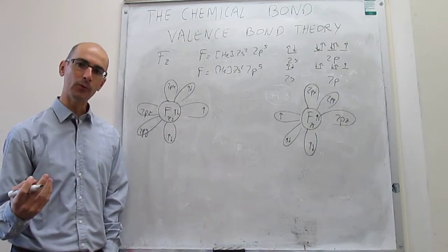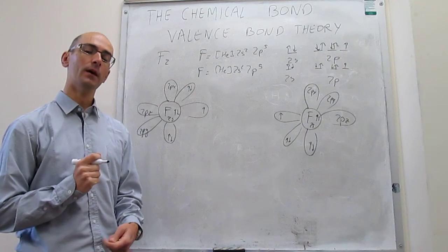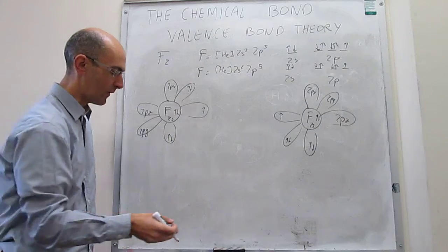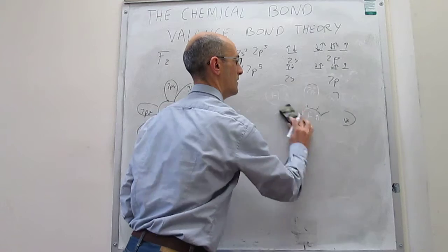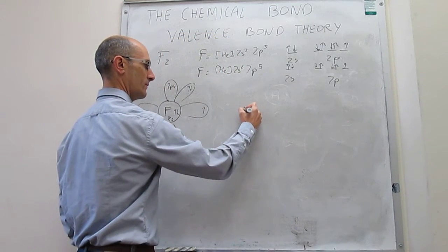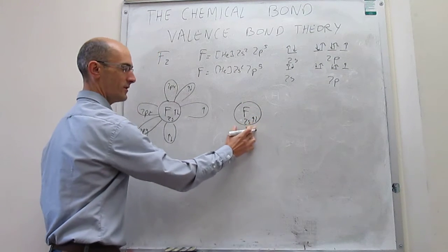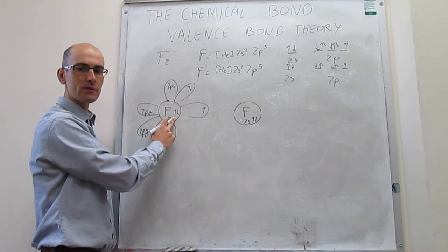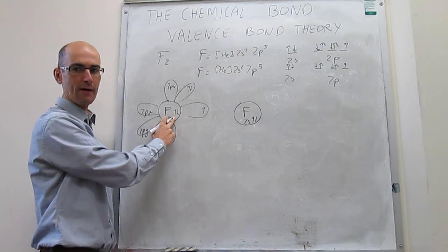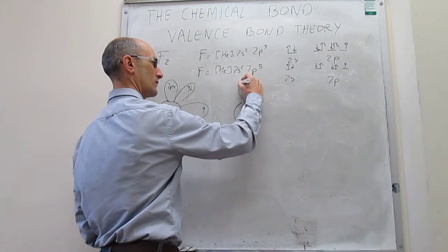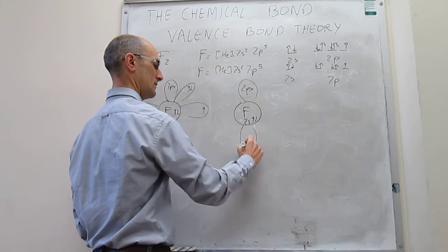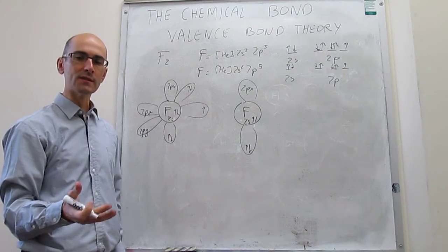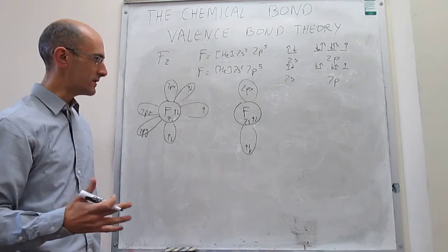Now we bring the atoms together and examine how the wave functions overlap. The 2s orbitals are doubly occupied, so no overlap occurs between them — that would put too many electrons in the same region of space, violating the Pauli exclusion principle. Similarly, the 2px orbitals are doubly occupied, so there is no overlap there either, as you would end up with four electrons in the same region. However, the 2pz orbitals — each singly occupied — can overlap, giving only two electrons in the bonding region, satisfying the Pauli exclusion principle as long as the electron spins are anti-parallel.